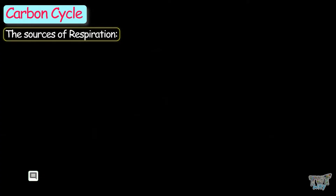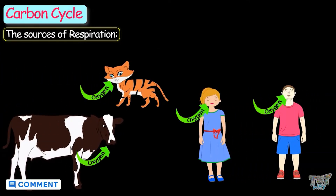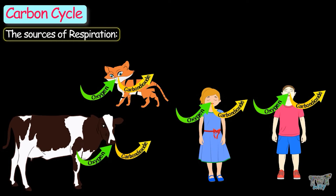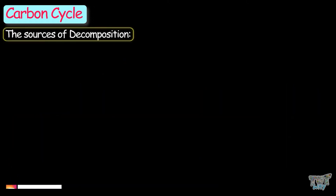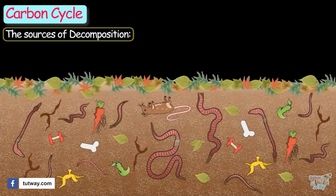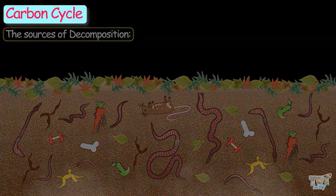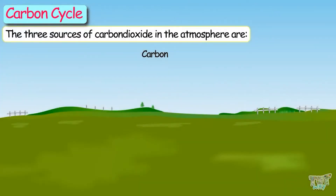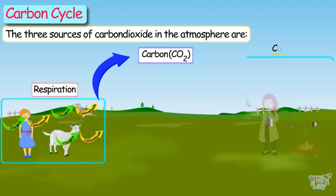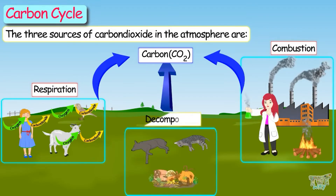All animals respire and release carbon dioxide into the atmosphere. The third source of carbon in the atmosphere is decomposition. Decomposition of dead remains of all plants and animals releases carbon dioxide into the atmosphere. So the three sources of carbon dioxide in the atmosphere are respiration, combustion, and decomposition.